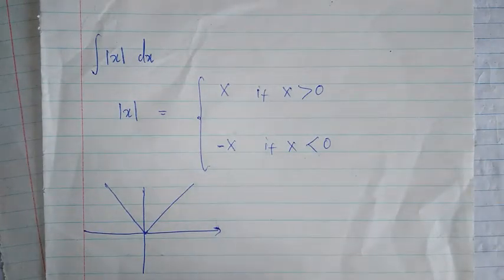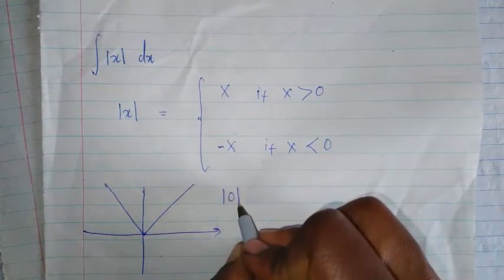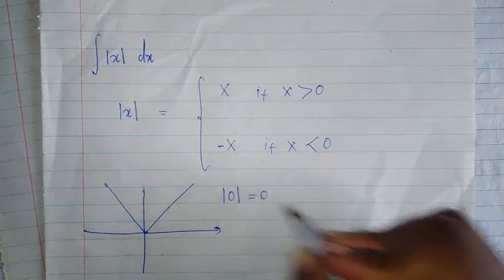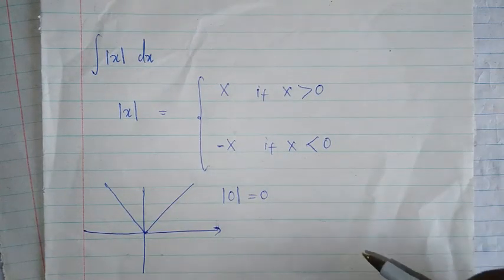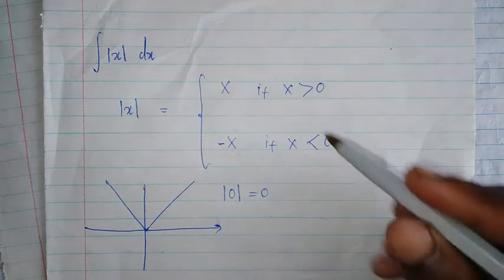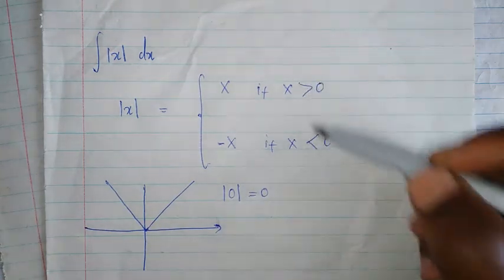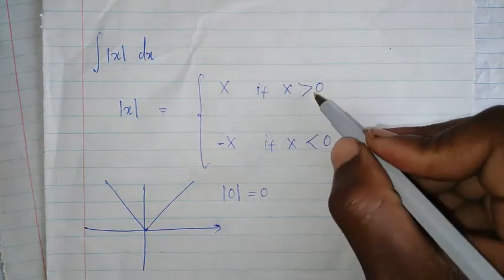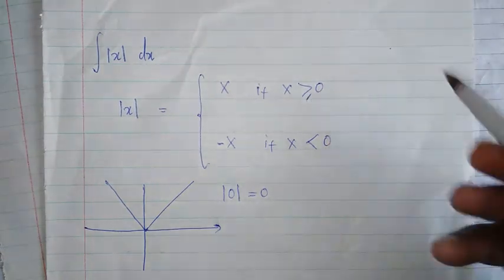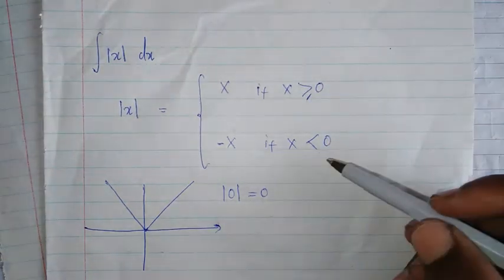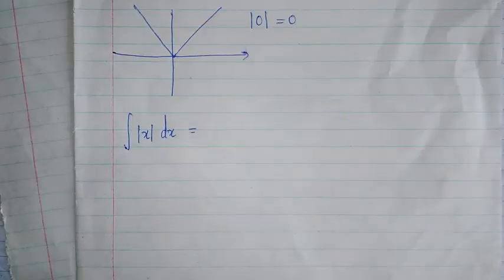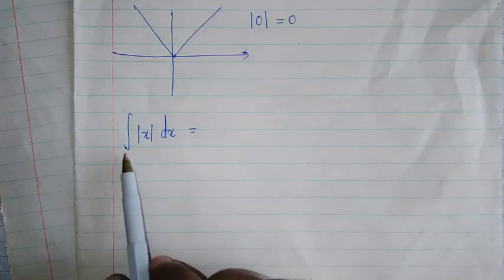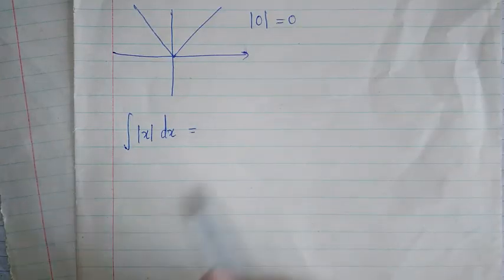But what happens if x is equal to zero? We're saying modulus of zero is equal to zero. So we need to put an equal sign on one of the two parts — I'll prefer this one, but you can choose either. Once we know this, we can say modulus of x is in two parts.